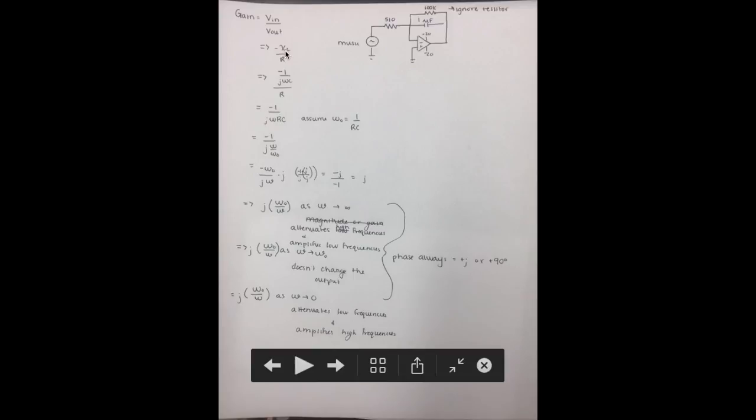And then we know that the capacitance, X capacitance, is equal to negative 1 over J omega C over R. And then we get negative 1 J, negative 1 over J omega RC. We're going to assume that omega naught is equal to 1 over RC. And then we're going to get negative J omega over omega naught.